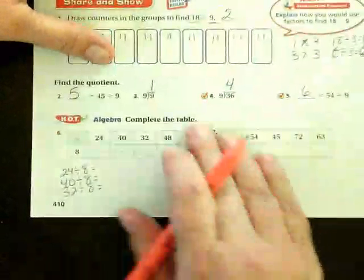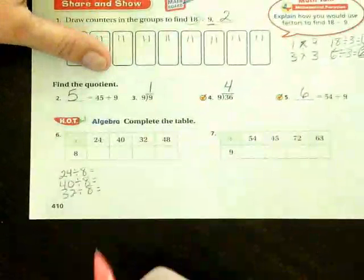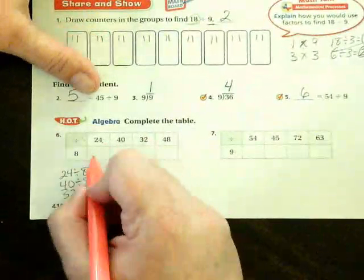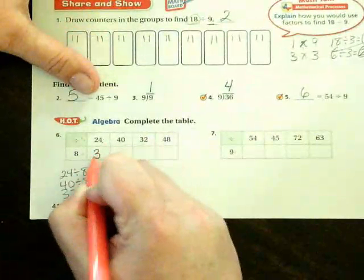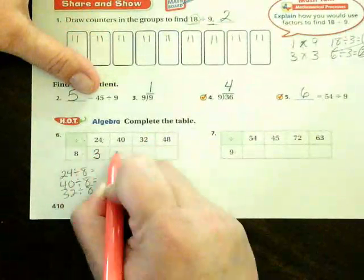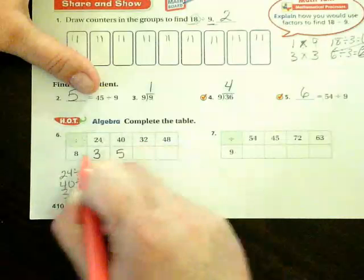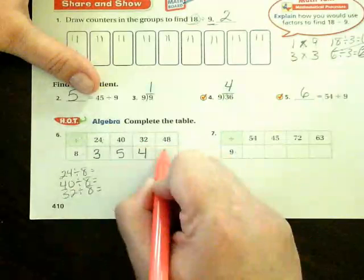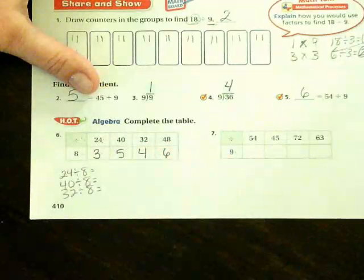And now let's do some completions of tables. We are dividing by 8 on this one. 24 divided by 8, 40 divided by 8, 32 divided by 8, and 48 divided by 8. Those are your answers.